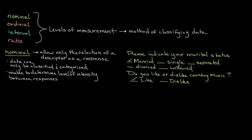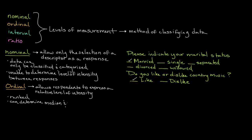A more powerful level of measurement is the ordinal scale. The ordinal scale gives respondents the opportunity to express some relative level of intensity between responses. Responses obtained through an ordinal scale can be ranked and allow the user to determine both the median and mode in their analysis.